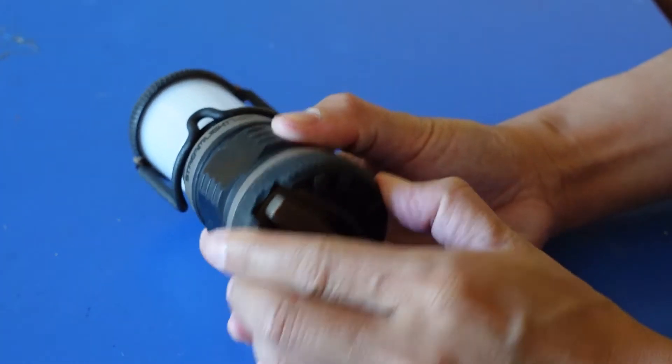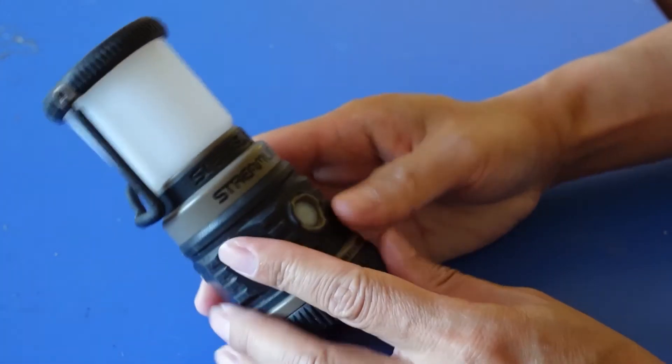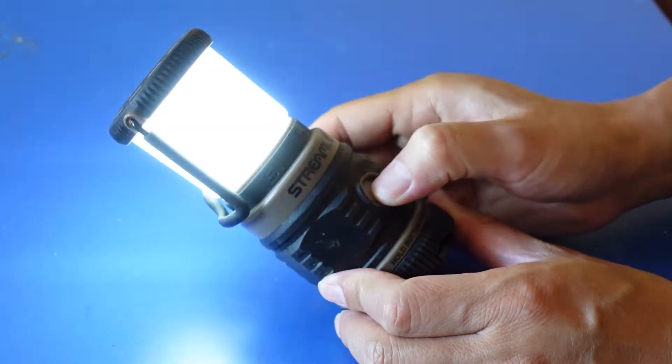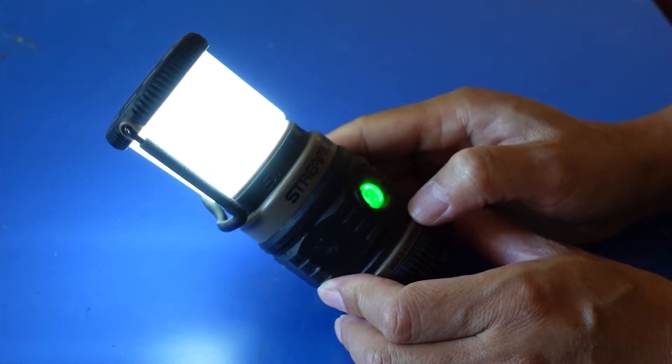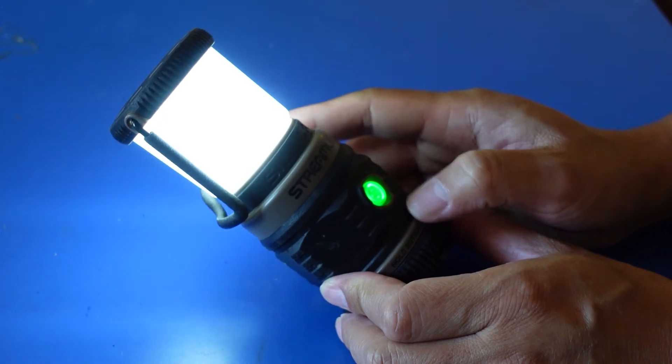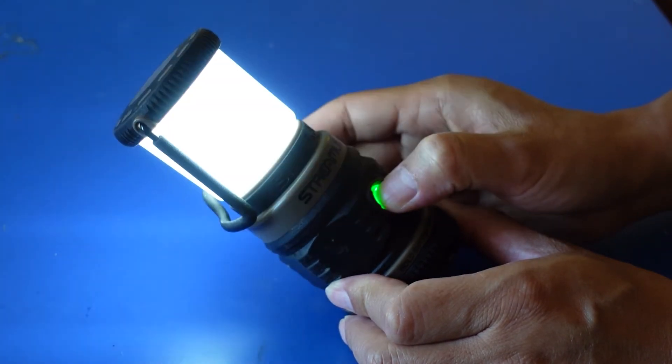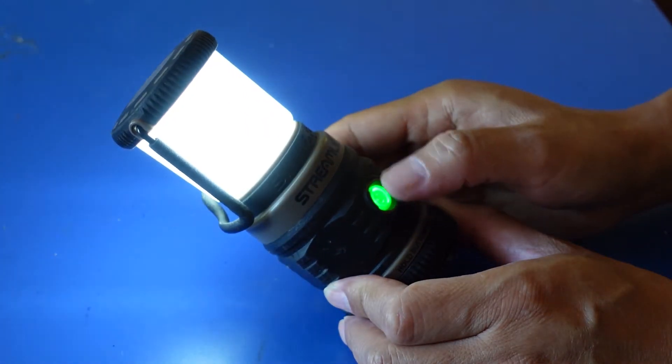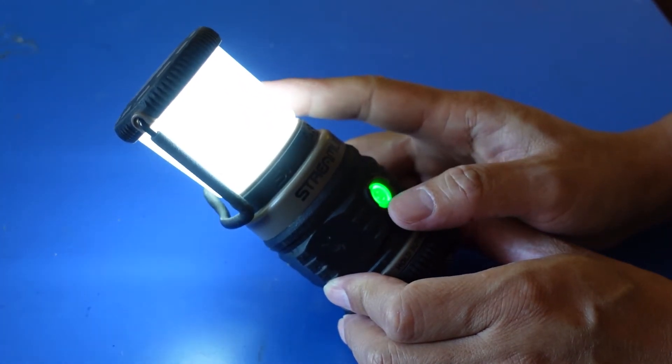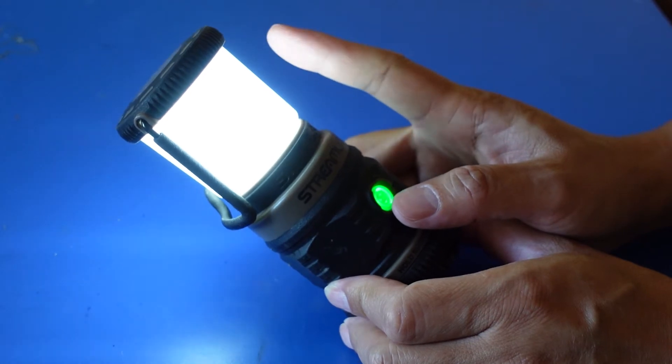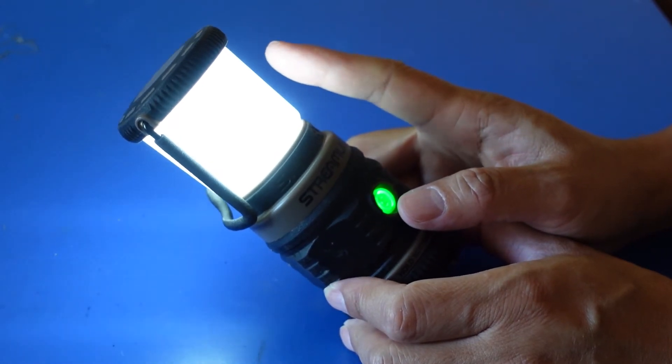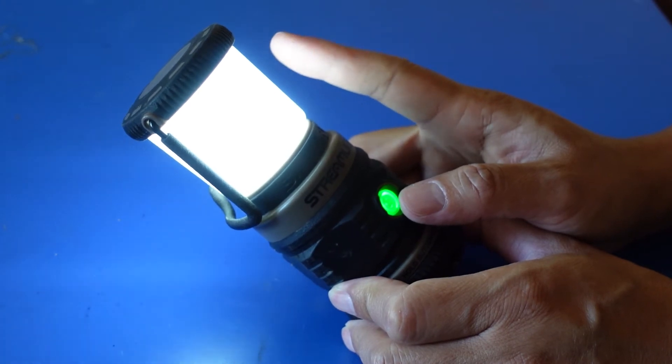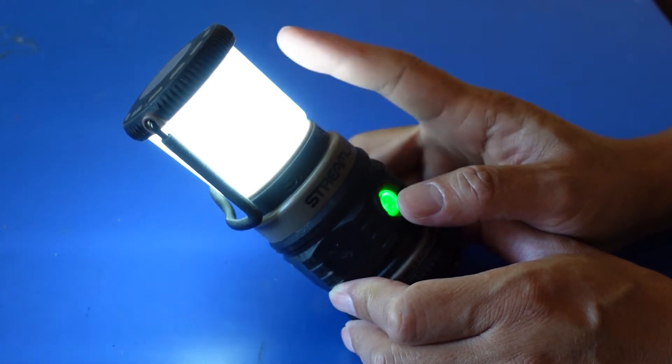Lock it down, twist it, lock it and push it once. That's the low setting. It generates 50 lumens and the battery will last 37 hours on the low setting.